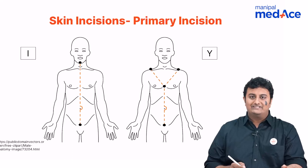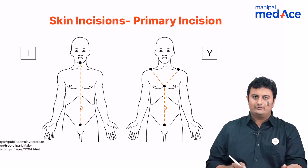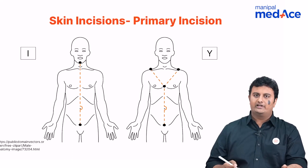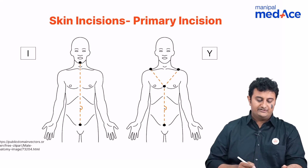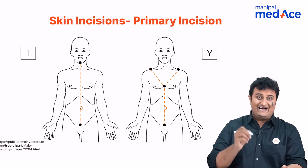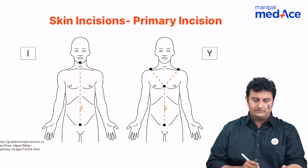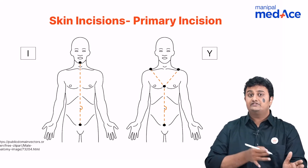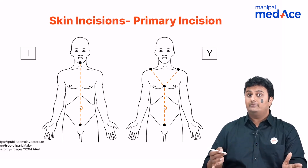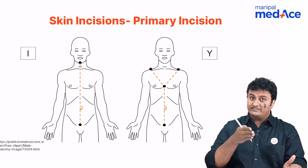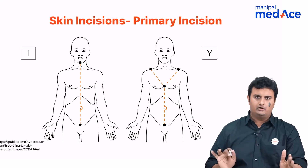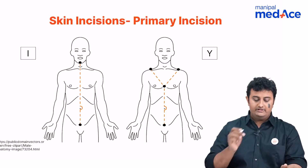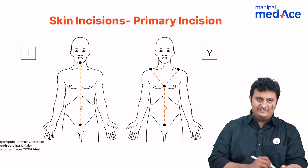Let us talk about the skin incisions that we place while doing an autopsy. The first and most common one is known as the eye-shaped incision. These incisions are also known as primary incisions because it is the first incision that you will place on the body.